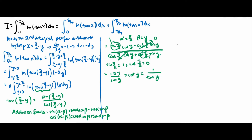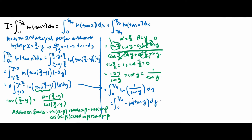Substituting this answer into this function, we have the integral from 0 to pi over 4 of ln(1/tan(y)) dy, which simplifies to the integral from 0 to pi over 4 of negative ln(tan(y)) dy. So now we come back and we have simplified the second integral.